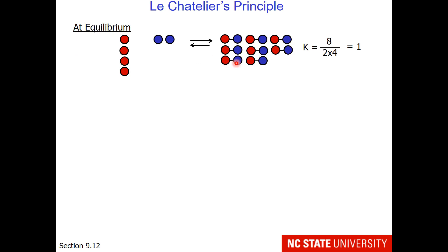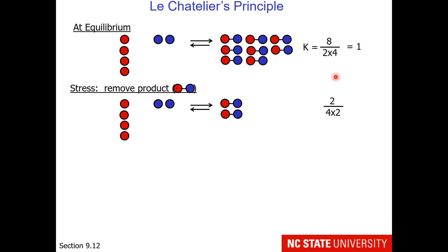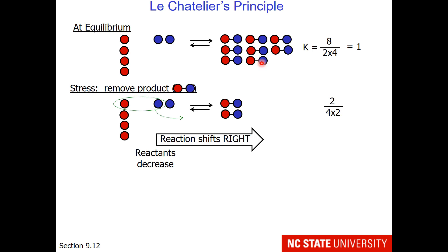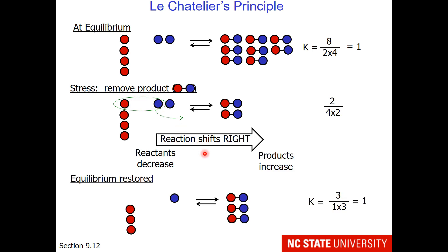This time my stress is going to be to remove product. I had 8 product molecules — I'm going to remove 6 of them so that only 2 are left. Removing is like pulling, so if I remove from the right, the reaction shifts right in order to replace that material. That means my reactants will decrease — I'm going to form 1 covalent bond — and my products will increase. Equilibrium is restored with 3 product molecules and reactants at 3 and 1, giving an equilibrium constant of 1.